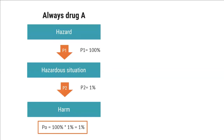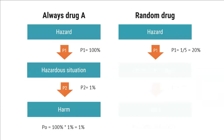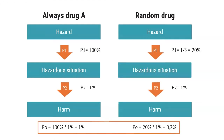So we're pretty far away from assuming PO should be 100 percent. In the random drug example, the software failure will happen but there's no way to predict whether the failure results in drug A or any other drug. If the hazard situation is that drug A is incorrectly chosen, the likelihood of the hazard situation occurring is 20 percent. And since only one percent of patients are allergic to drug A, the likelihood of harm is 0.2 percent — quite a difference.